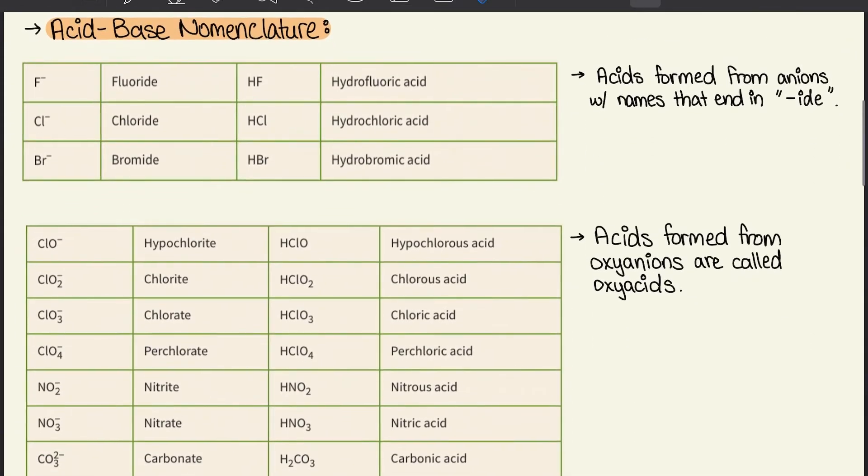Moving on to acid and base nomenclature. Acids formed from anions with names that end in "-ide"—like fluoride, chloride, and bromide—once we add an H in front of them, we start naming them with hydro and then the name of the element. We drop the "-ide" and add "-ic" acid at the end.